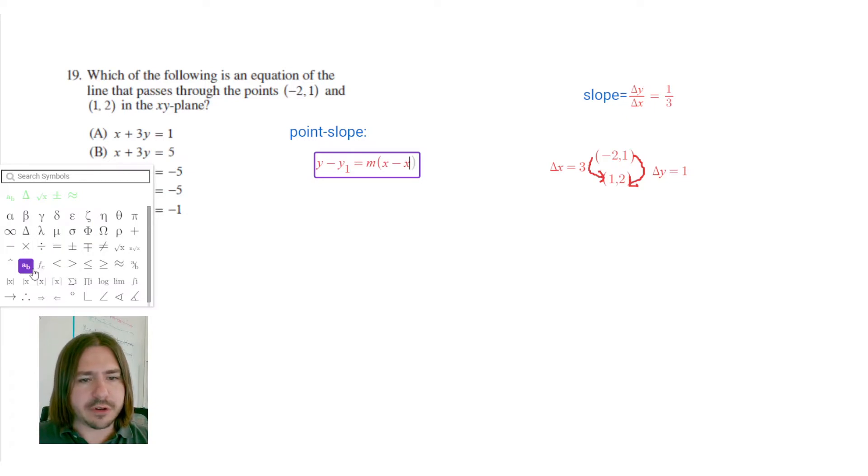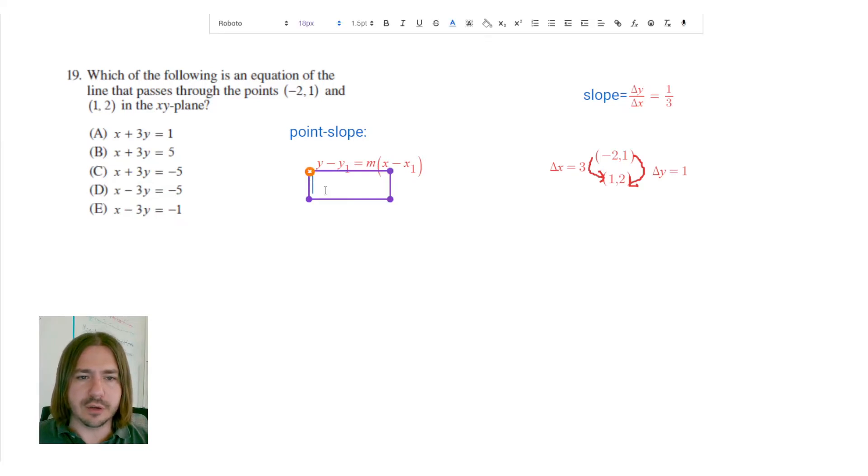The format for this is y minus y1 equals m times (x minus x1). Now, the parameters here, the m is the slope. The x1, y1 represents just any point on the line. So m is the slope, and the x1, y1 is just going to be any point on the line.